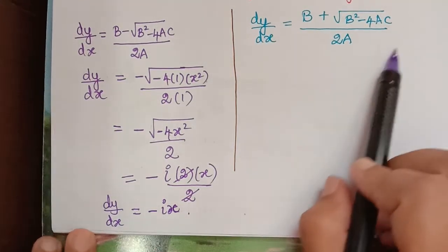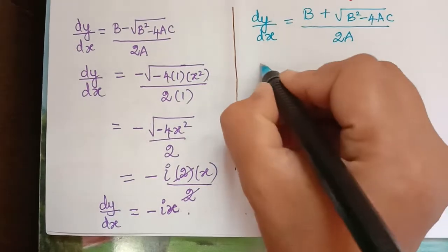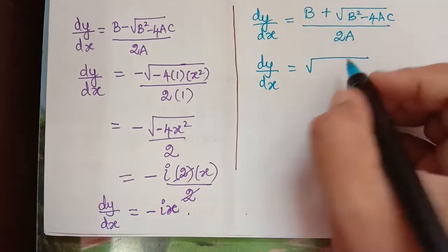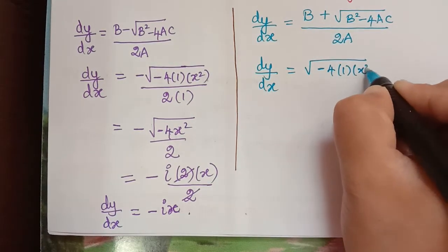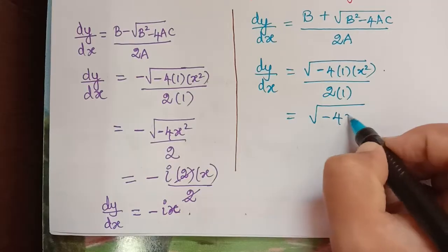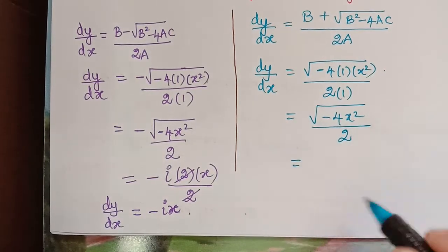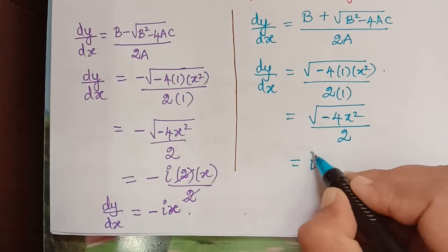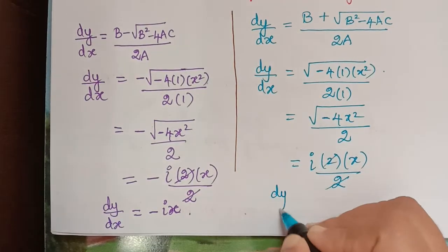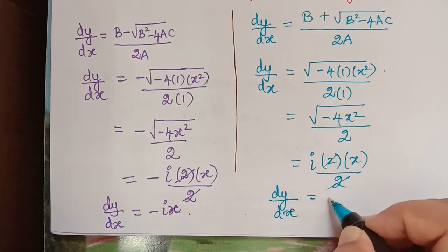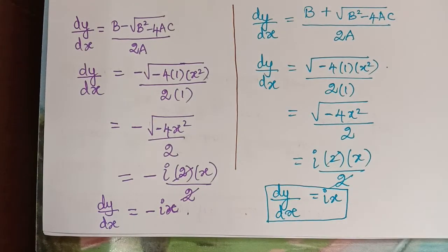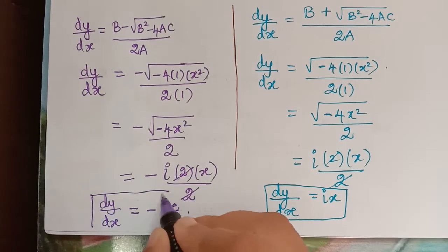In a similar way, we find the second characteristic equation. dy/dx equals 0 plus the square root of B squared (0) minus 4 times 1 times x squared, divided by 2 times 1. That equals the square root of minus 4x squared divided by 2, which gives ix. So the first characteristic equation is dy/dx equals negative ix and the second is dy/dx equals ix.